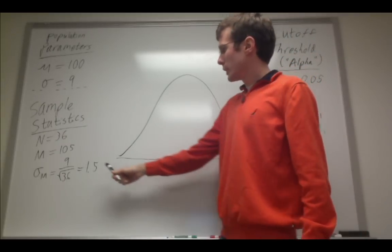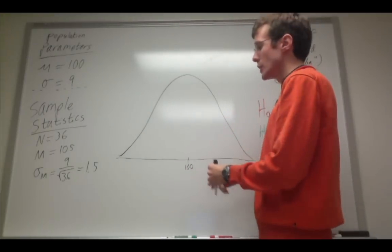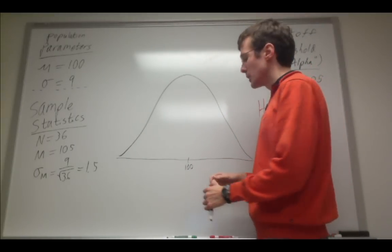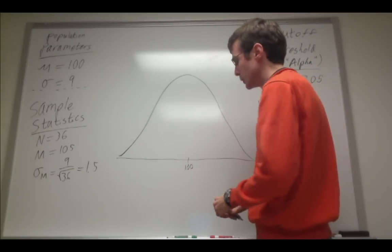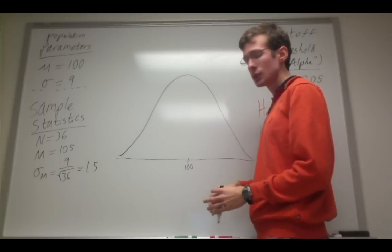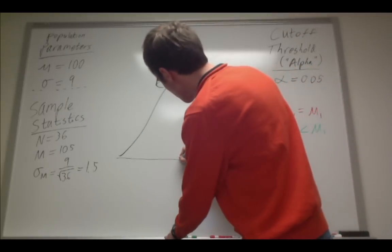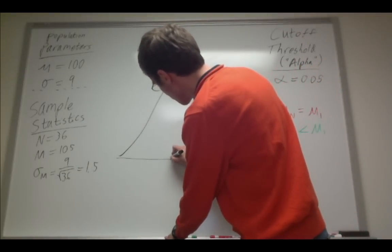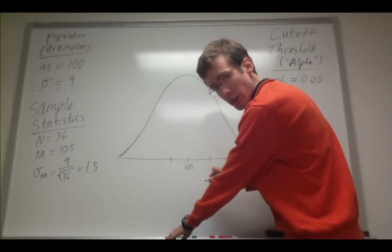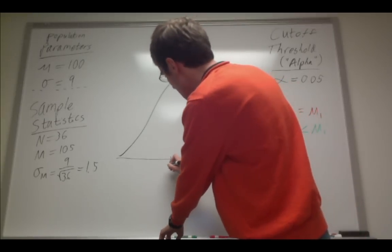And I've already calculated my standard error. So I know what, on average, the error should be in my estimation of the mean of the null distribution. Simply the standard deviation, in other words, of a sampling distribution. So it's 1.5. So I know that in terms of raw IQ scores, if I go 1.5 in either direction, that's the same as going one standard deviation away from the mean.